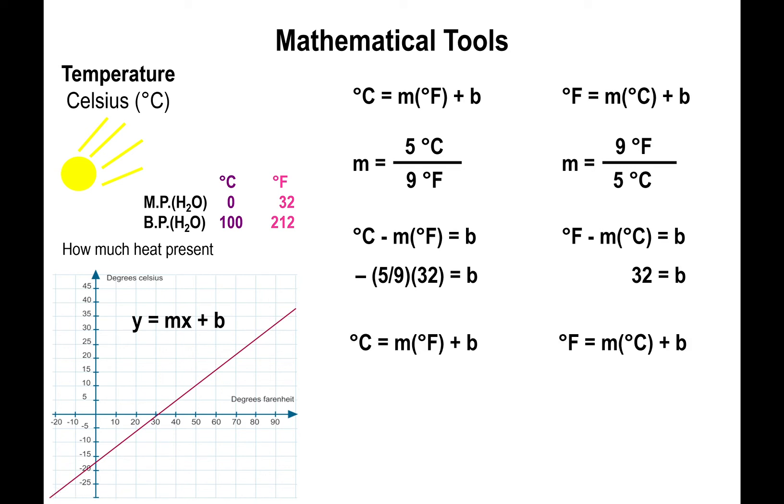So we have 0 for degrees Celsius minus 5/9ths times 32 equals b. Those are the melting point values. And over here we have 32 minus 9/5ths times 0 equals b. So anything multiplied by 0 is going to be 0, so this basically leaves us with negative 5/9ths times 32 for the value of b for the first equation, and for the second equation b is equal to just 32.